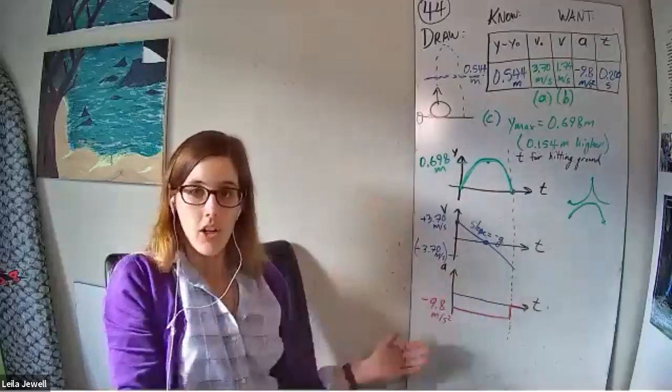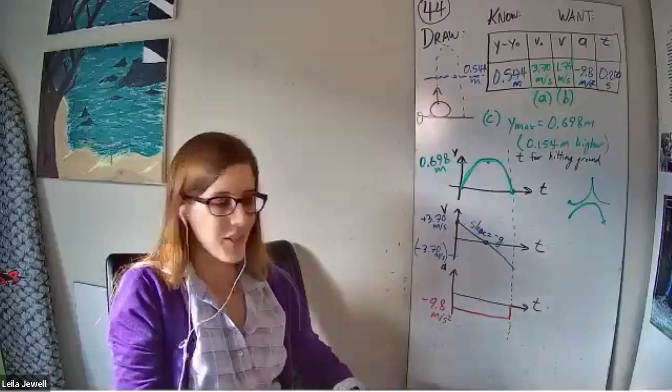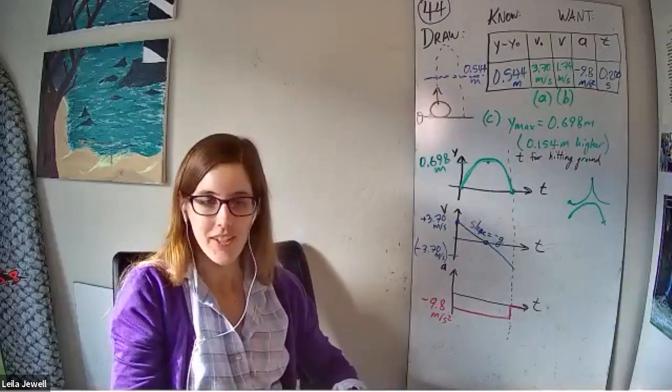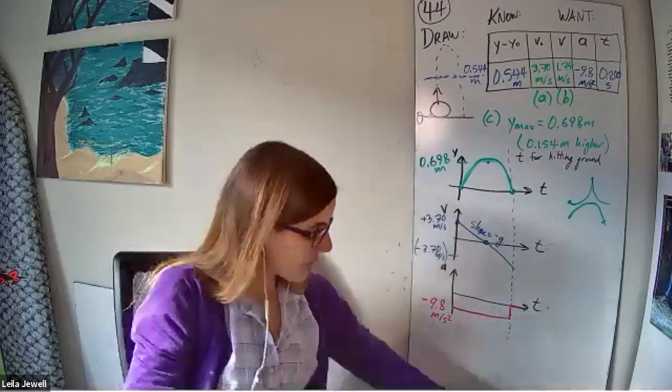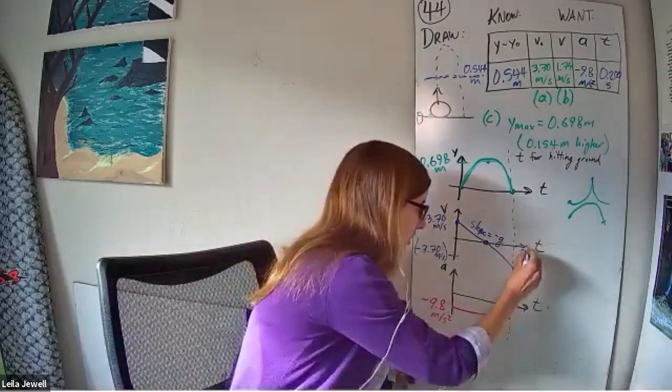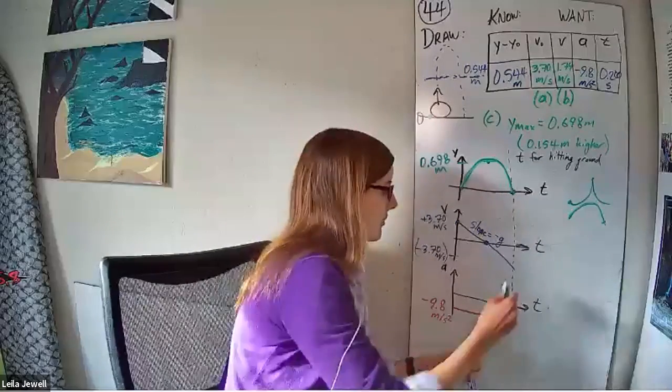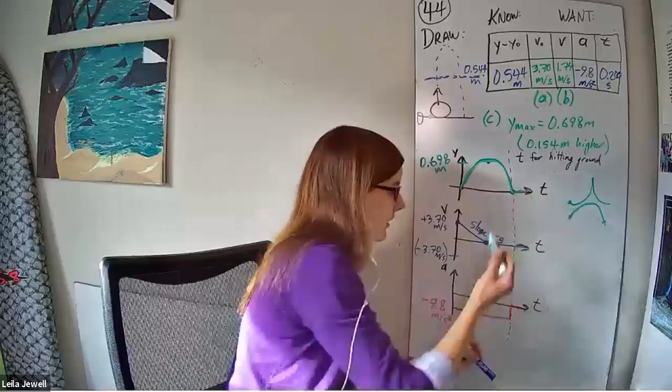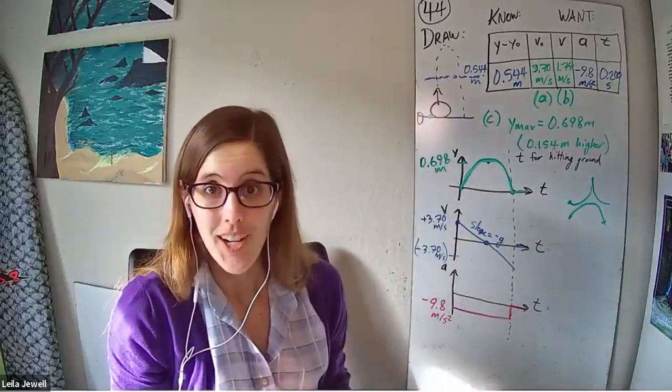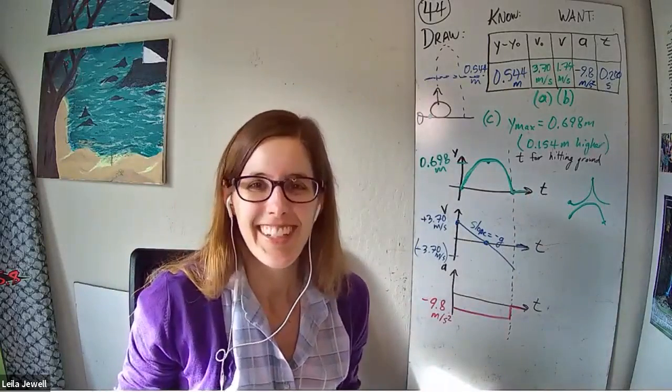Right, so there we have our three graphs of position versus time, velocity versus time, and acceleration versus time while the armadillo is in the air. We could also show the velocity goes to zero after the armadillo reaches the ground. That's not usually shown too much and the position will stay at zero as well. So there we have it. If you have questions on this, please do ask. I would love to talk further on it. All right, catch you later.